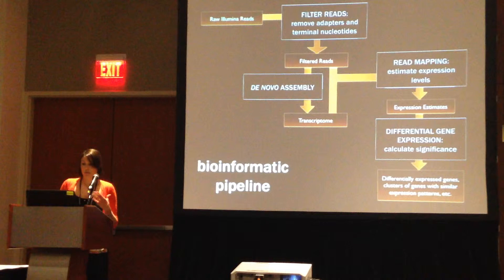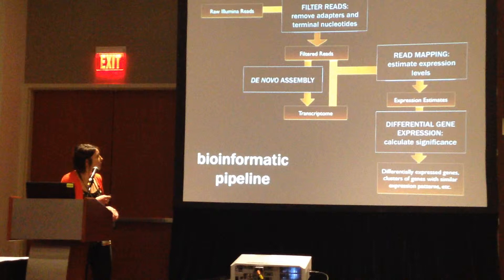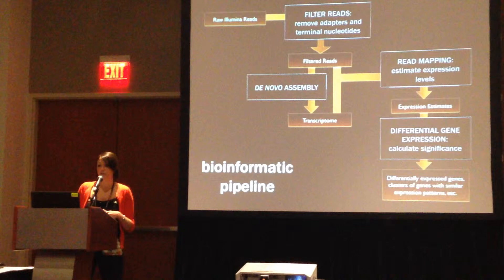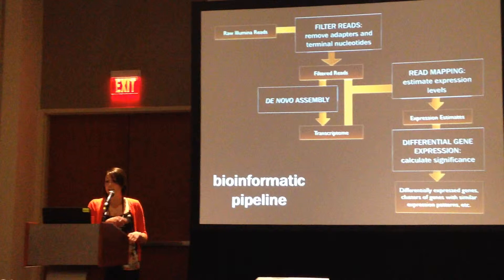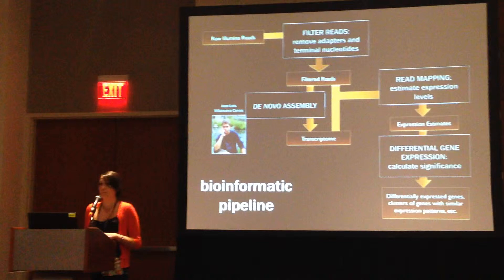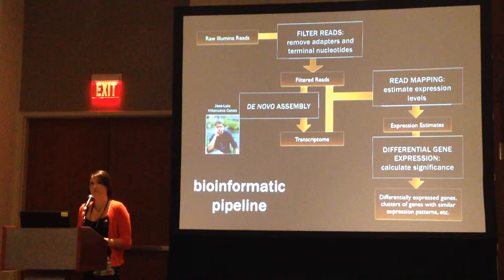This is a rough roadmap of the bioinformatic pipeline we used. We take our raw Illumina reads and do a filtering step to remove adapters and terminal nucleotides, which are characterized by a low quality score. We then take our filtered reads and use them to generate our transcriptome using de novo assembly. From here, we map our reads back onto the transcriptome to estimate expression levels and calculate significance of differential gene expression. I should point out that all this work was done by our collaborators in Barcelona in Mara Alba's lab, specifically her graduate student Jose Luis Villanueva Canis.